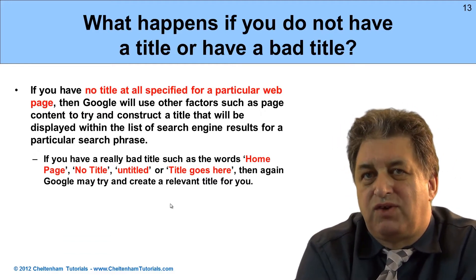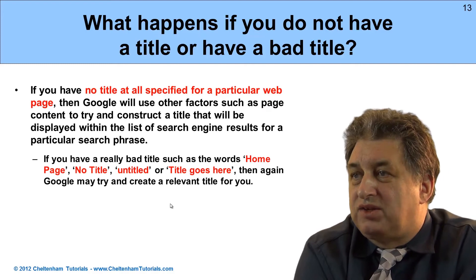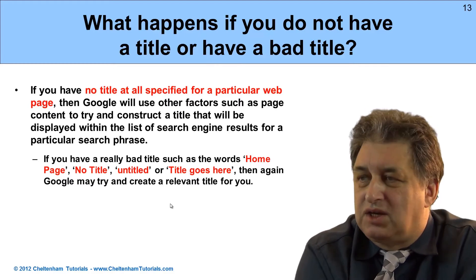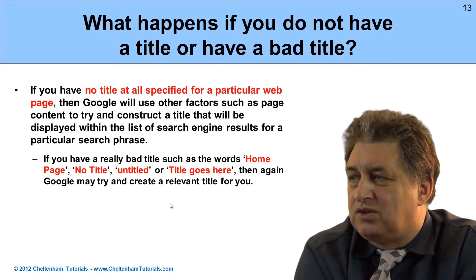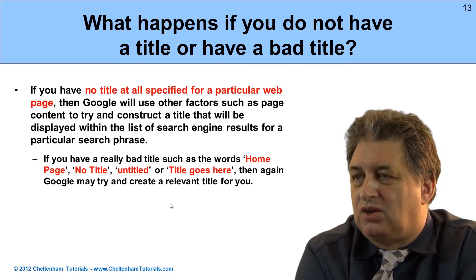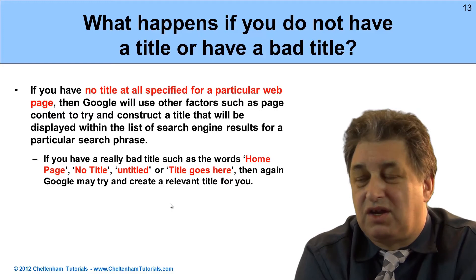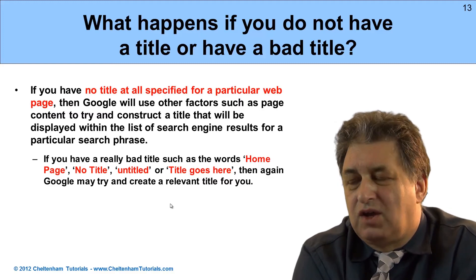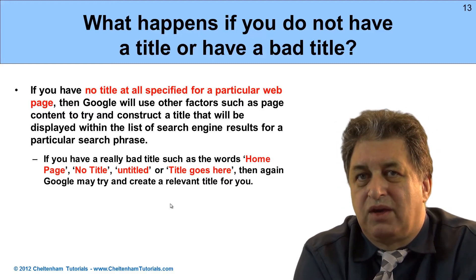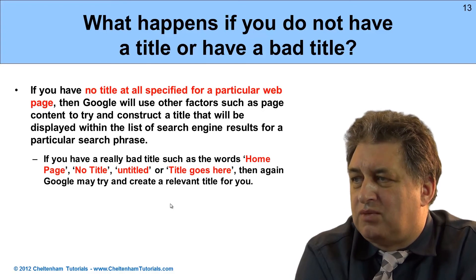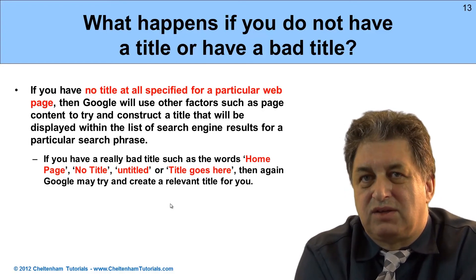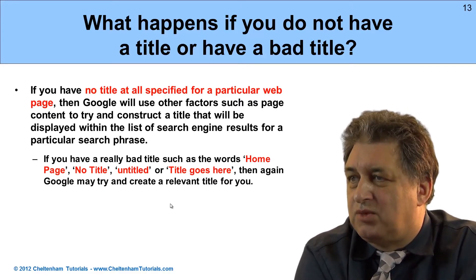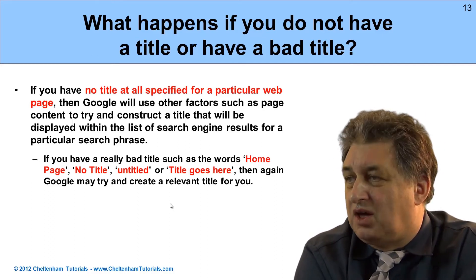If you don't have a title or have a really bad title, Google will use its relevancy algorithm and look at the contents of your page to make up a title on the fly. Things like 'home page', 'no title', 'untitled', or 'title goes here' — the permutations are endless. You see this time and time again on websites written by people unsure of what they're doing, or by web designers who produced pretty pages but haven't optimized from a search engine point of view.